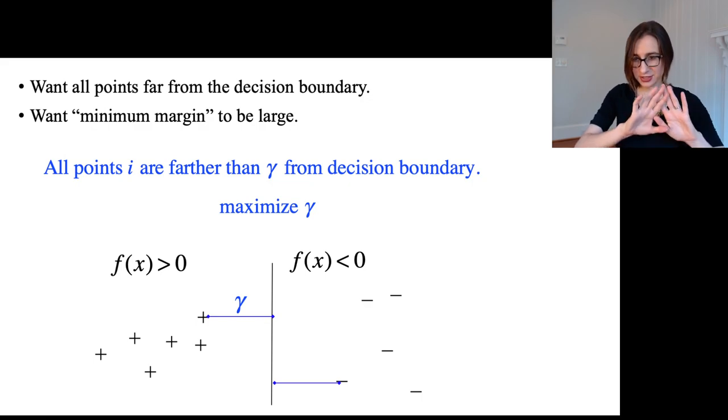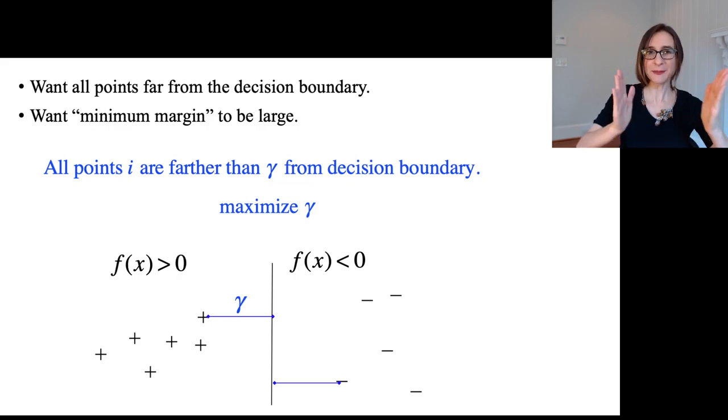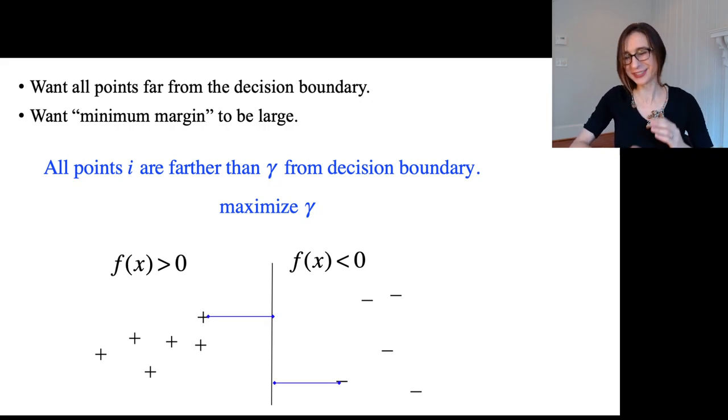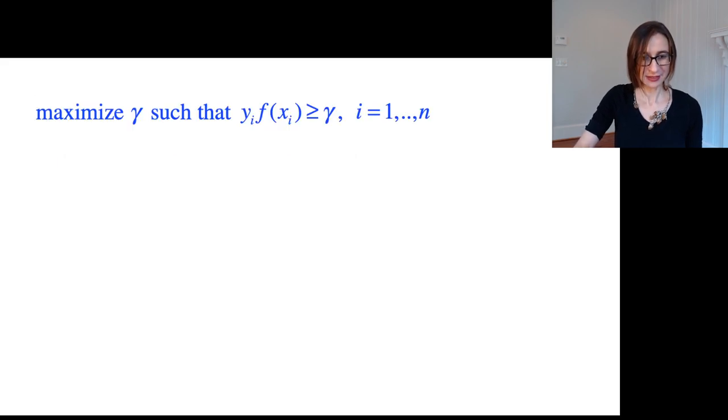This is the functional way of showing this and we want all the points to be correctly classified with at least a distance of gamma away from the decision boundary and we're going to try and maximize that gamma. So it's nice and stable and then when new points come in, hopefully they'll be correctly classified. Here's our formulation so far: maximize gamma such that all the margins are at least gamma.